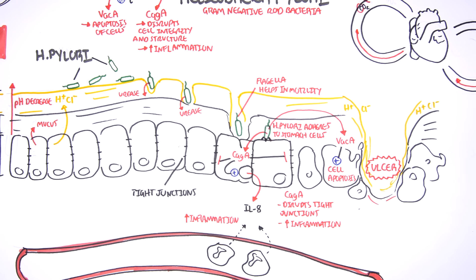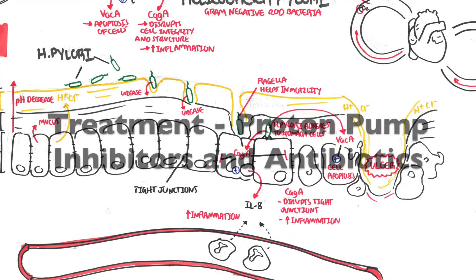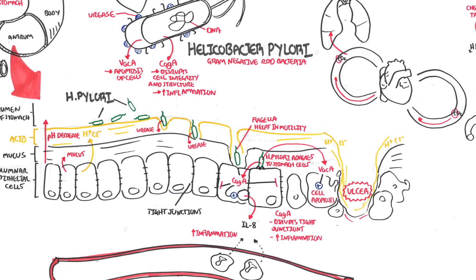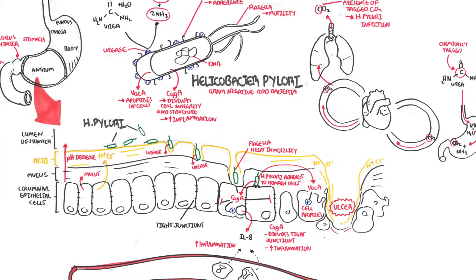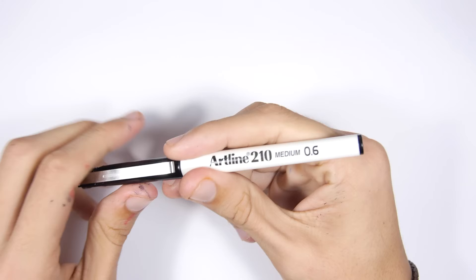To treat H. pylori infections, you usually use proton pump inhibitors to prevent hypersecretion of hydrochloric acid, and you also use antibiotics to target the Helicobacter pylori. I hope you enjoyed this video, thank you for watching.